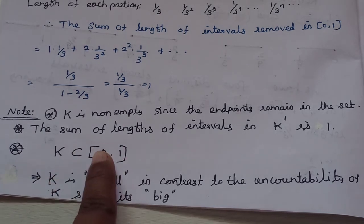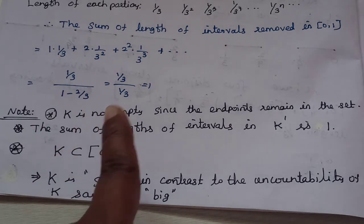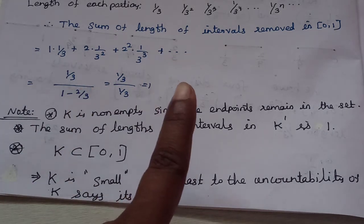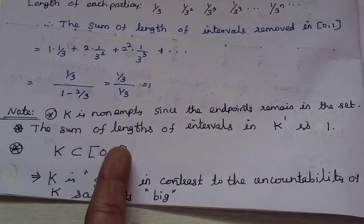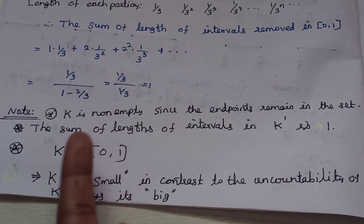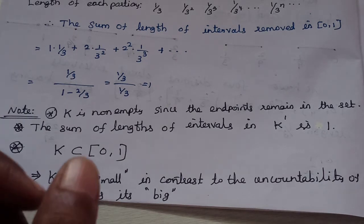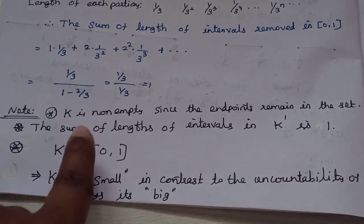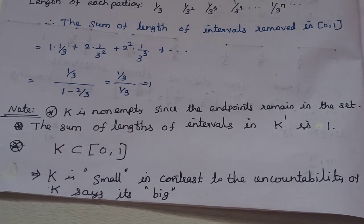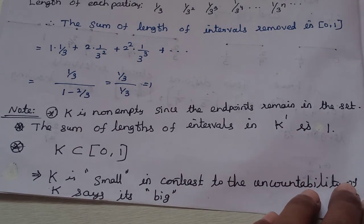We call K small in measure, but it is uncountable — that is the beauty of the Cantor set. K is a subset of [0,1] with length 1 removed via sub-intervals, yet it remains non-empty and uncountable. This is the beauty of the Cantor set.